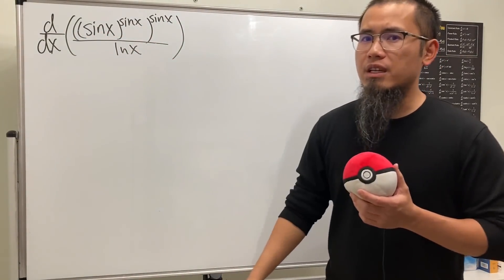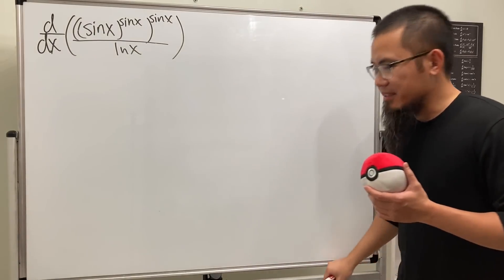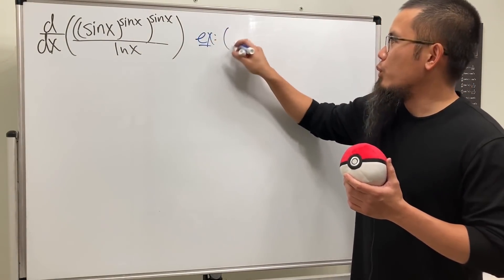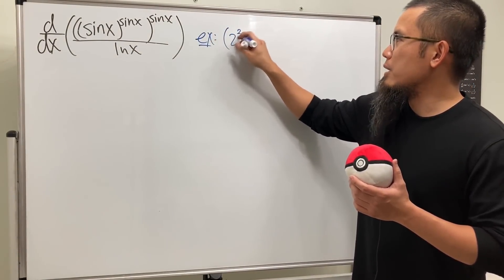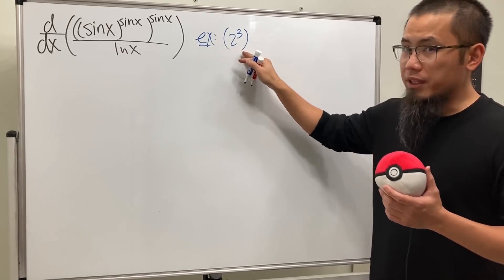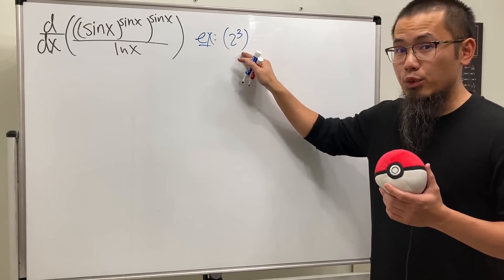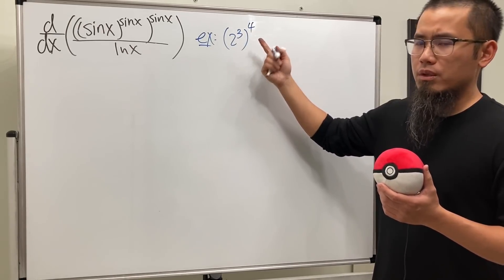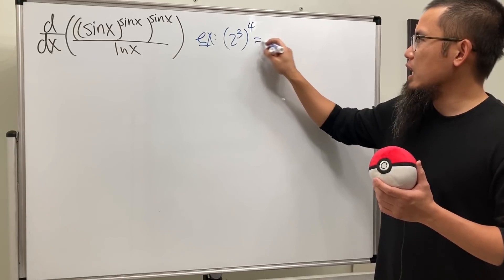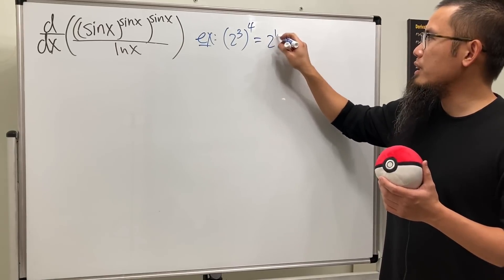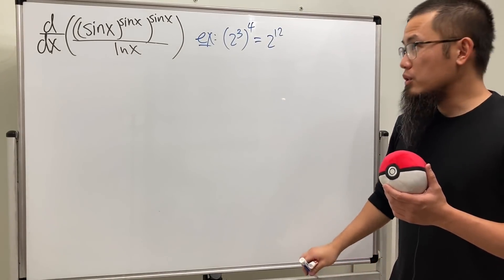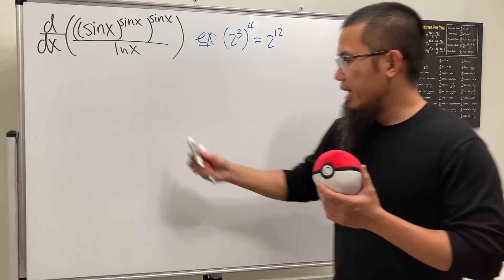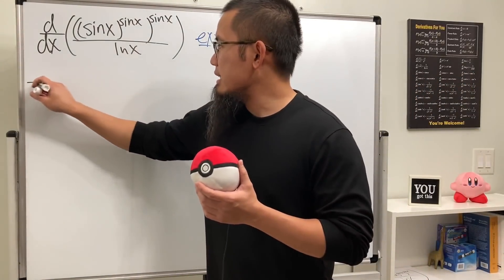The idea is like this — let me give you an example. Remember when we have 2 to the third power in parentheses and then raised to another power, say the fourth power? What can we do? Just multiply the powers together and we get 2 to the twelfth power.